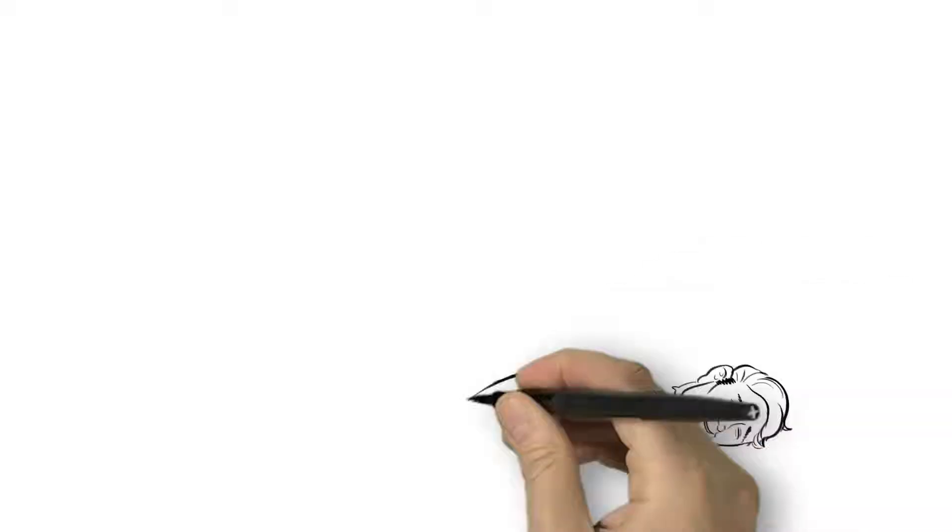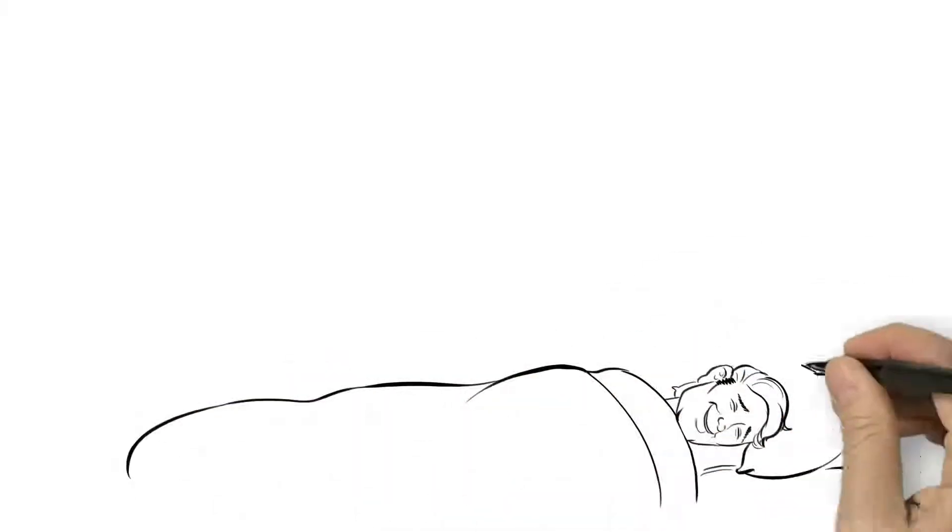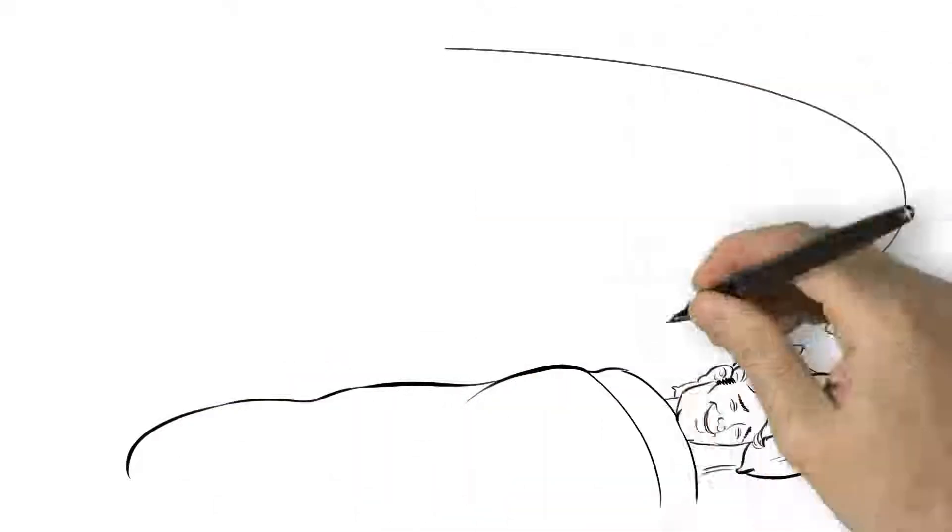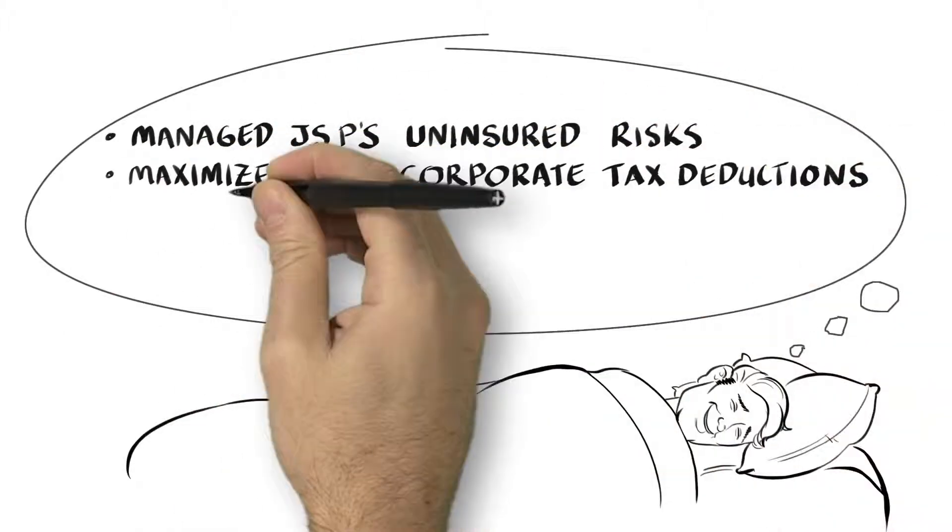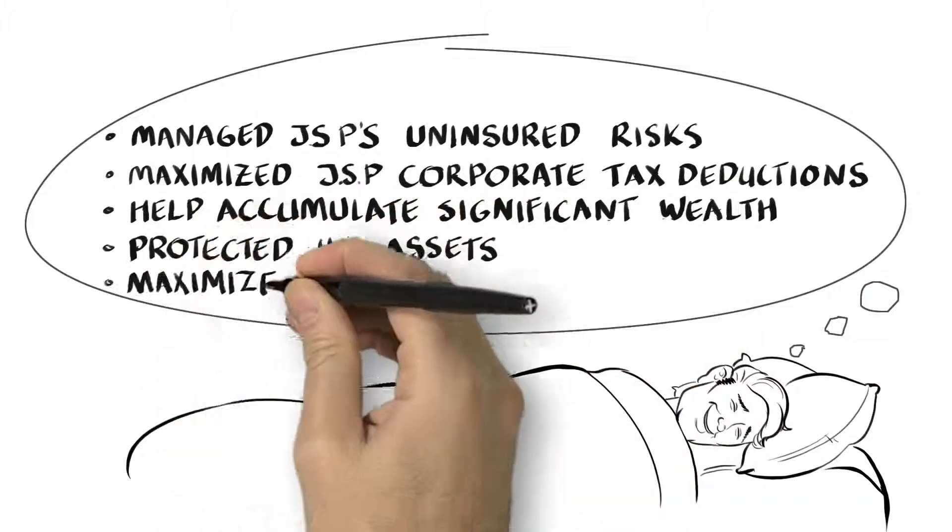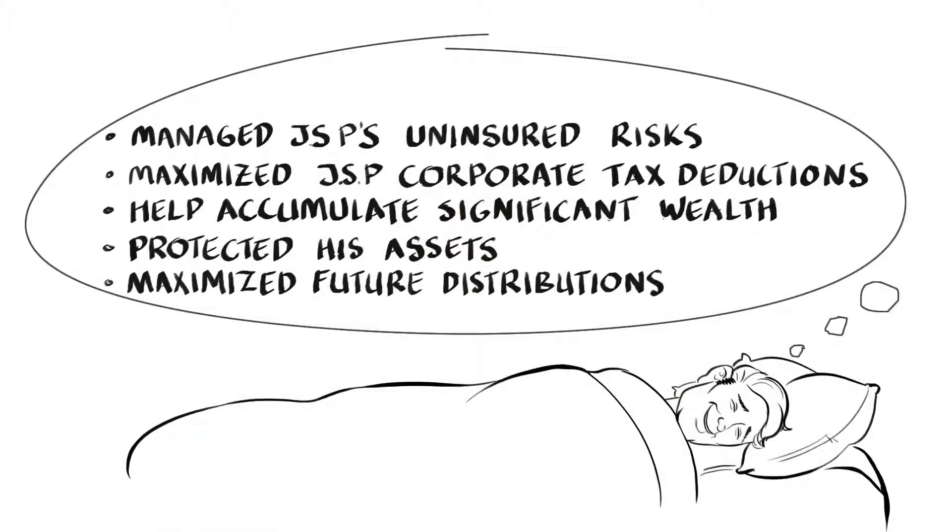Jim now sleeps easy knowing that Knight International has protected his company against uninsured risks, maximized JSP's corporate tax deductions, accumulated significant wealth and protection, and maximized future distributions for him and his family.